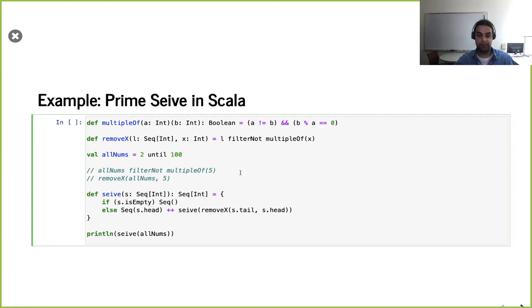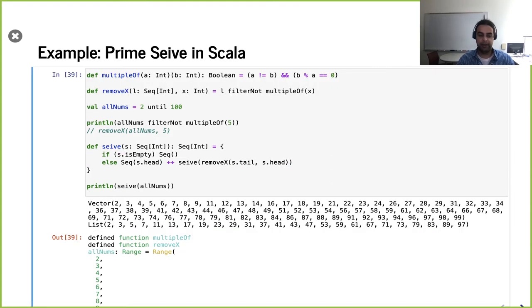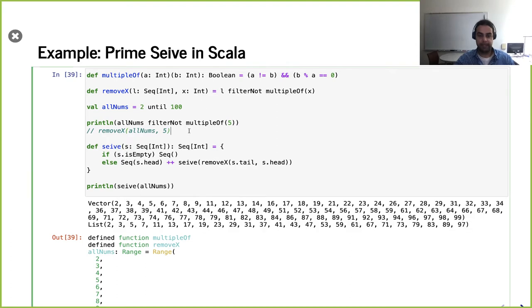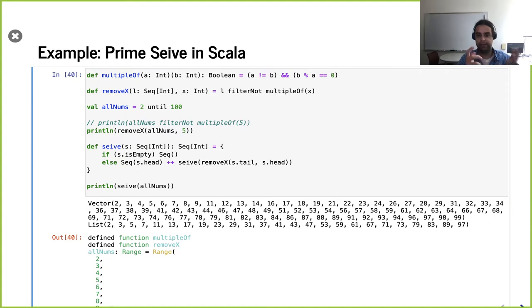For example, if we have all numbers from 2 to 100 and remove all multiples of 5, we keep 5 itself in the first occurrence but not later copies. And then if we use the function we defined, it does the same thing — the first 5 is still there, but later ones are not.